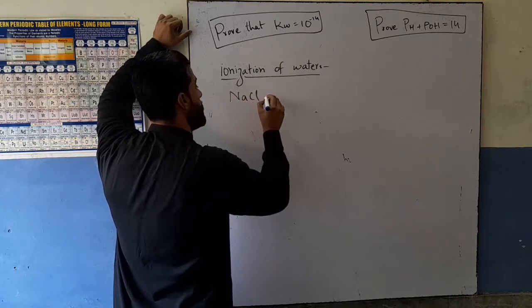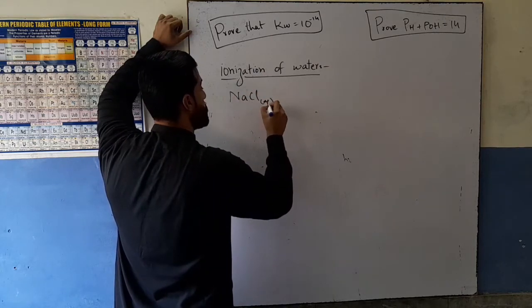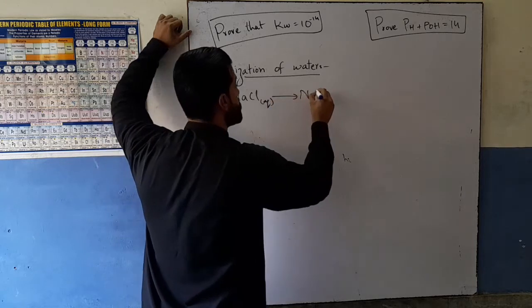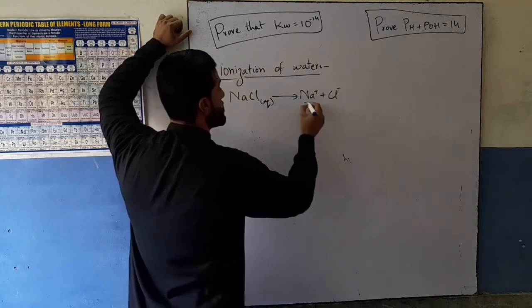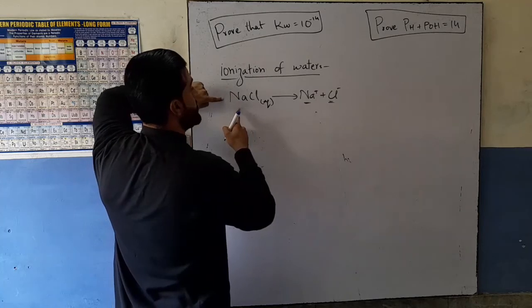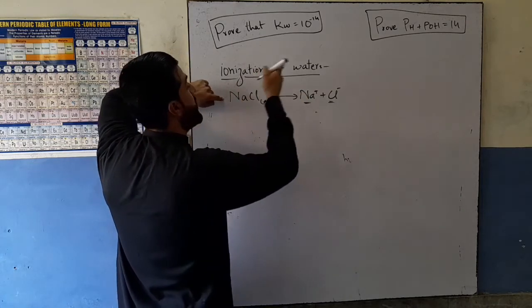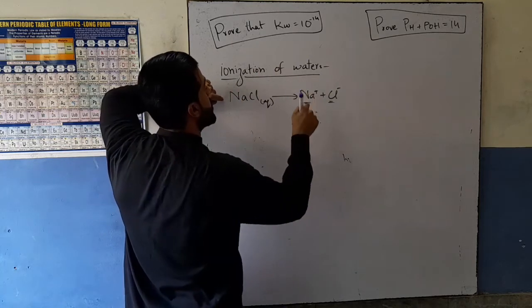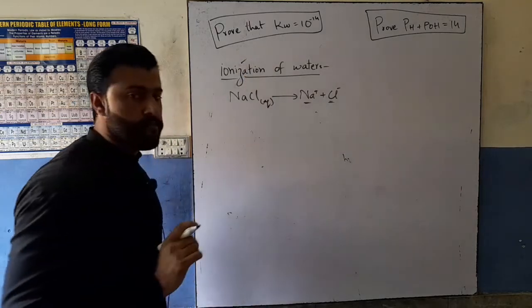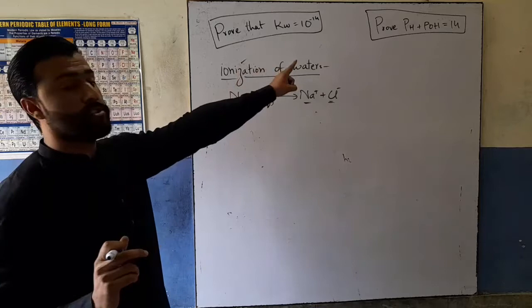In an aqueous solution of NaCl, the electrolyte dissociates: sodium and chloride ions are produced. Sodium chloride undergoes this ionization process — similar to the ionization of water.